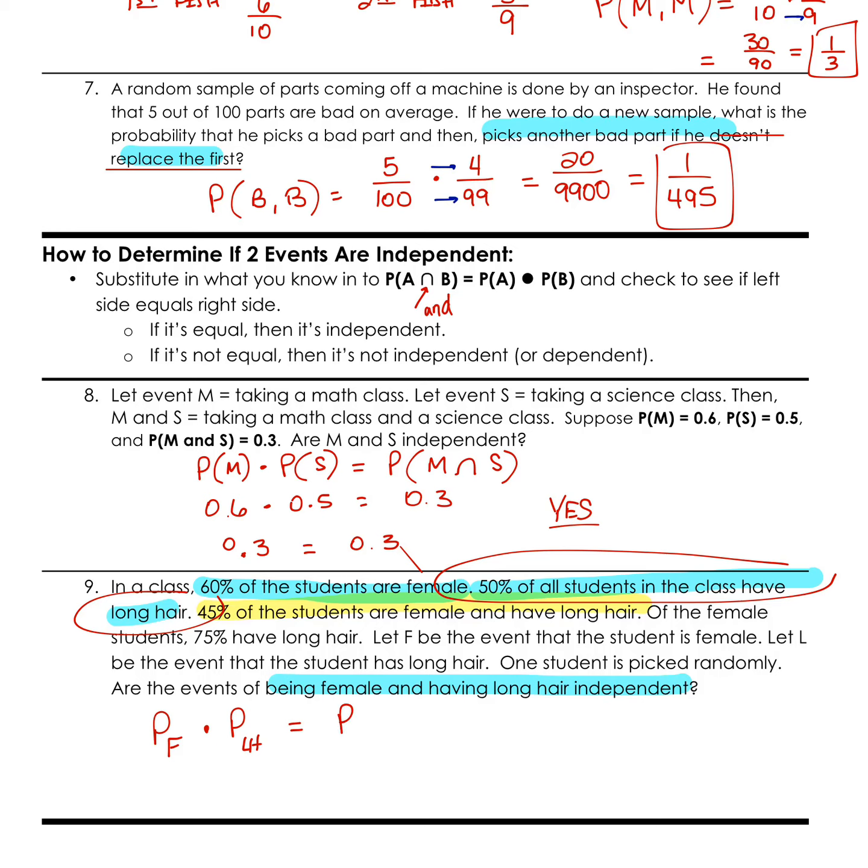So that 50% of students, there's our trick. That's what they're trying to get us. 60% female. So there's our 0.6. 75% of those females have long hair. So 0.75. And according to our thing, 45% of students are female and have long hair. Multiply 0.6 and 0.75 together. And we find out that 0.45 is equal to 0.45. So yes, our events are independent.